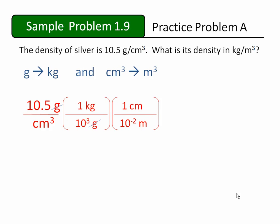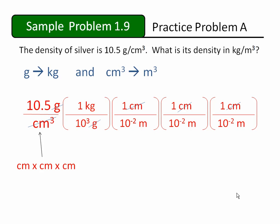Our starting volume unit was centimeters cubed. That's the same as centimeters times centimeters times centimeters. If we're going to successfully cancel all of these centimeters, we'll need to use this same conversion factor two more times. This will allow us to cancel all of the centimeters and leave us with meters cubed in our denominator.